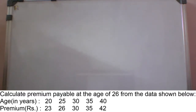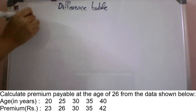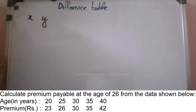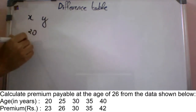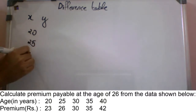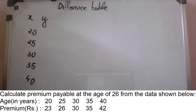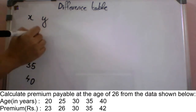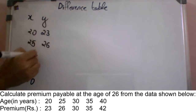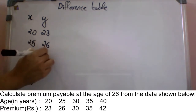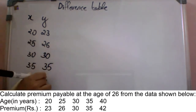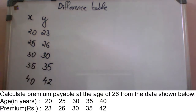First, we need a difference table. The x values are 20, 25, 30, 35, and 40. The y values are 23, 26, 30, 35, and 42. So here we have delta y values and the differences are given.